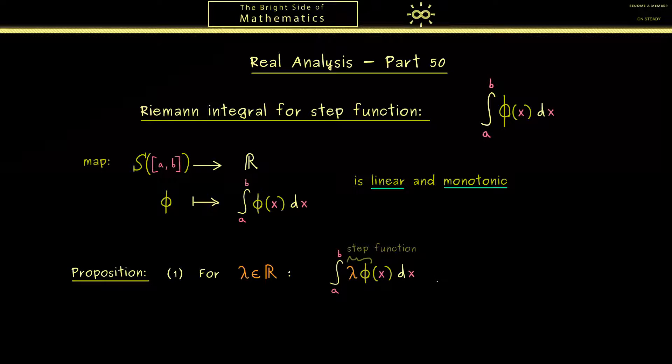Hence lambda phi is a new step function. However the result here is that the area of the scaled step function is almost the same as the original area. Indeed we only have to scale the original area. So this shouldn't be a surprise at all if you just think of the rectangles. Nevertheless you should remember a scaling factor I can just pull out of the integral. In fact such a property in mathematics we usually call homogeneous.